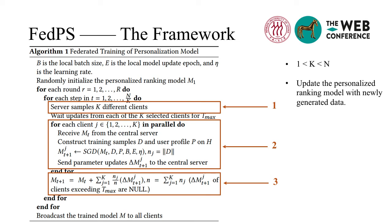We set a maximum response time and ignore those clients without response during this period. If we select one client in each step, all available clients are accessed one by one to update the model, but the parameter updates may expose the user's privacy to subsequent users. If we select all users, a lot of time is spent in every step. To balance effects and efficiency, we set K as an appropriate value between 1 and N. After training the model, users will continuously perform search and generate new query logs. Thus we can further update the personalized ranking model with new data, setting a fixed time interval to retrain the model from scratch or update the previous model with only the newly generated data.